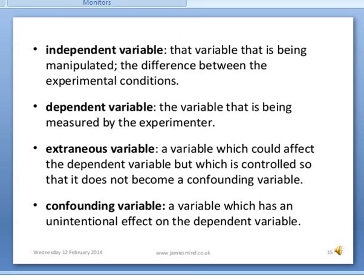The dependent variable is the variable that is being measured by the experimenter. The extraneous variable is a variable which could affect the dependent variable but which is controlled so that it doesn't become a confounding variable. The confounding variable is a variable which has an unintentional effect on the dependent variable.